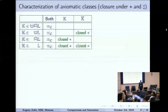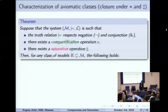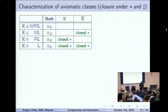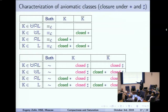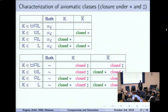Now we can formulate our final form of the definability theorem. If the truth relation respects negation and conjunction, and we have two operations — a compactification operation and a saturation operation — then we obtain the new table from the old one. In the case of first-order logic, we didn't have two separate operations in the cells, because closure under ultraproducts includes closure under ultrapowers — ultrapower is a special kind of ultraproduct.